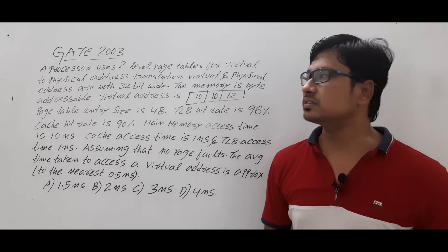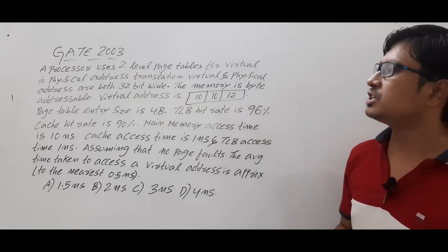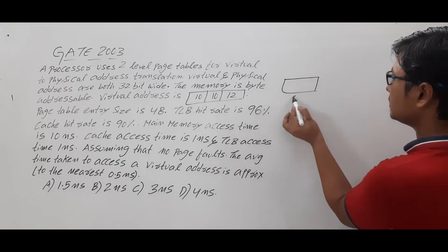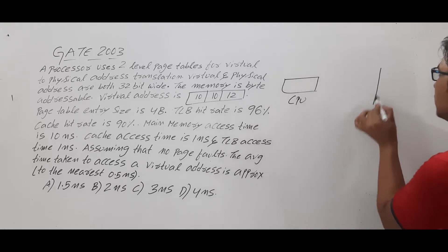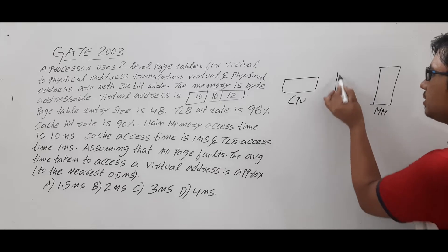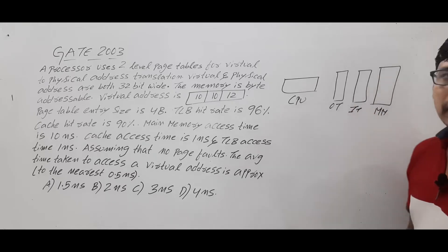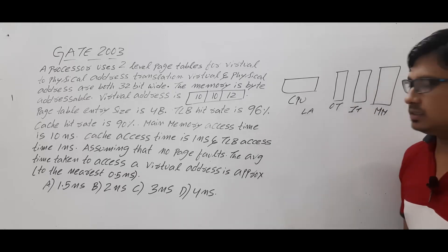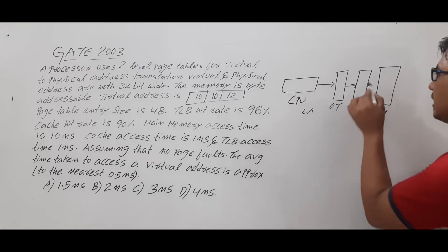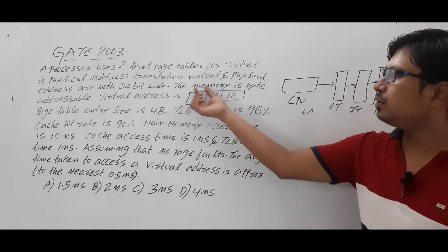The processor uses two-level page tables for virtual to physical address translation. So the CPU is there, and you have the main memory. As it is a two-level page table, you have the outer page table (OT) and the inner page table. The CPU will generate the logical address, go to the outer page table, then the inner page table, and then access the particular page.